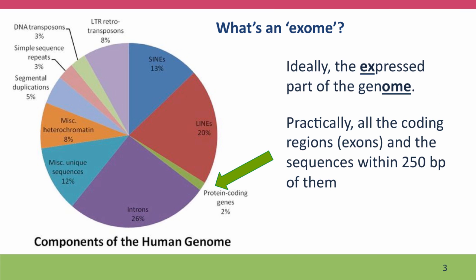So first, what's an exome anyway? An exome is a term that was invented to refer to the expressed part of the genome. In this diagram of the functions of the genome, the exome is basically the protein-coding genes — the exons of the protein-coding genes, not the introns. Practically, it's all the coding sequences and the sequences closely adjacent to them, so it captures much of the regulatory sequences as well.